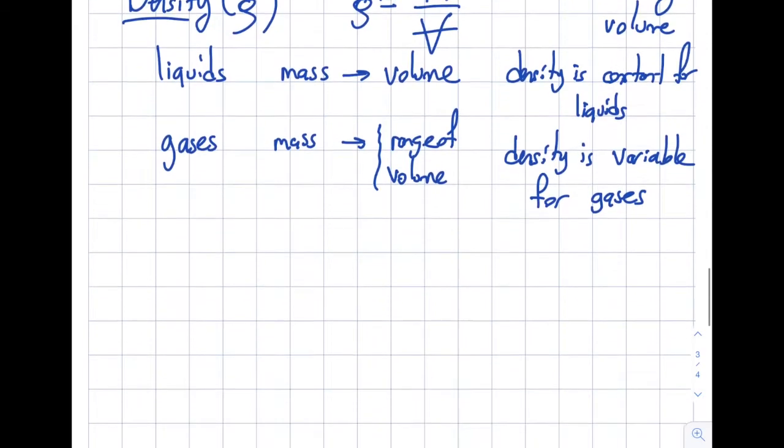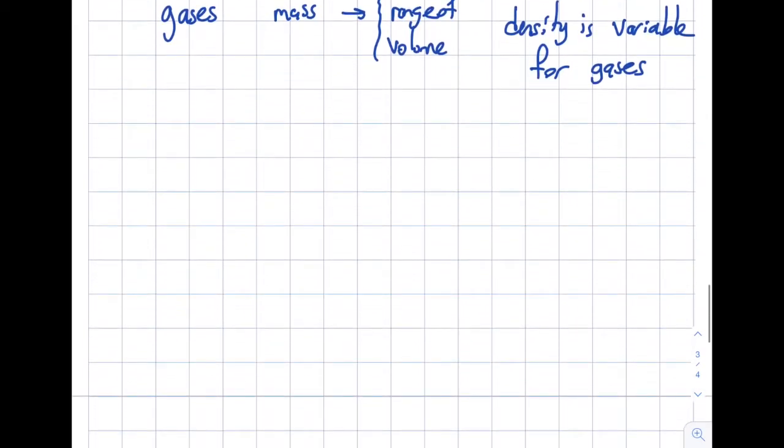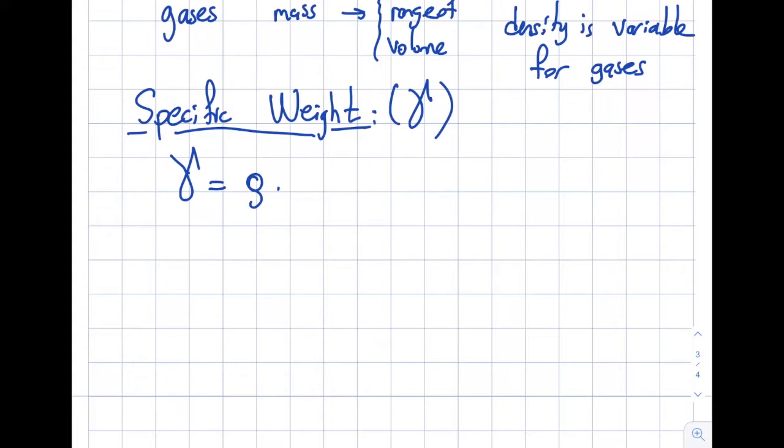The next I want to cover is specific weight. You may have heard this, you may not heard about it. That's quite all right if you feel everything is new to you. That's why you're here to learn. The letter is gamma, the Greek letter gamma. There's not much fancy going on over here. I have gamma, which is specific weight, equal to density times gravity. So this is the acceleration due to gravity.